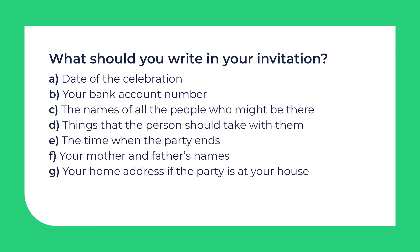Now I just have to make 15 more of those for all of my friends. Now let's check if you understood everything. There are some sentences on the screen. Pause the video and choose all the correct answers from the list and put a tick next to them. The question is: what should you write in your invitation? You can have more than one correct answer! Let's check! The correct answers are: A. Date of the celebration. D. Things that the person should take with them. E. The time when the party ends. G. Your home address if the party is at your house. Well done! I knew you could do it!